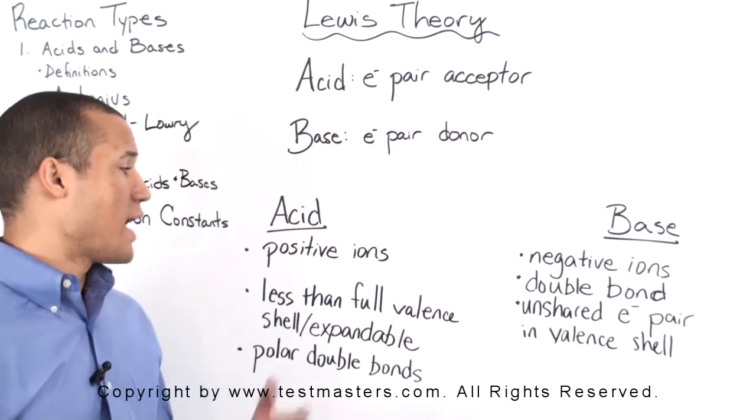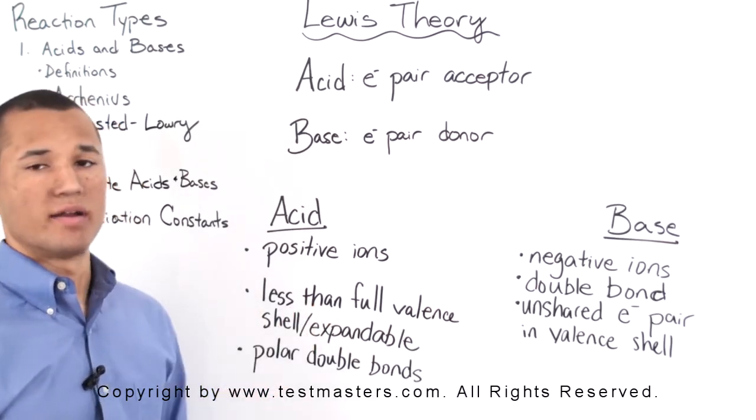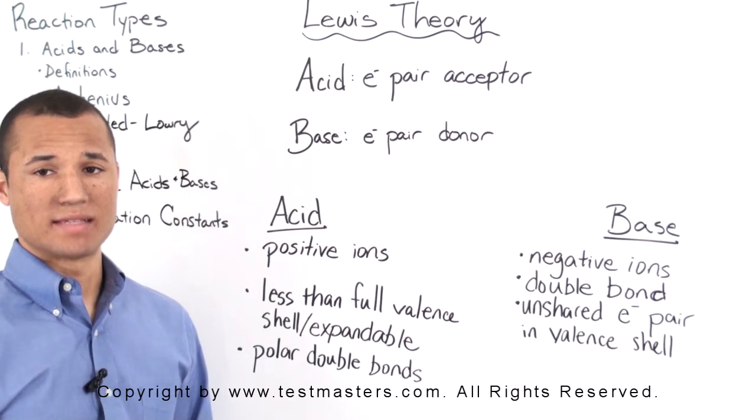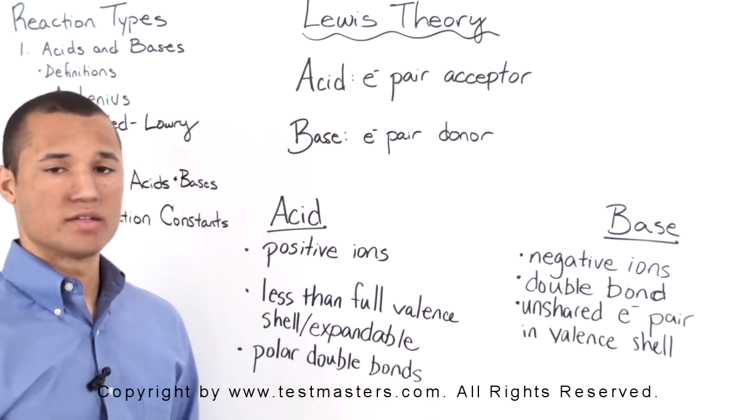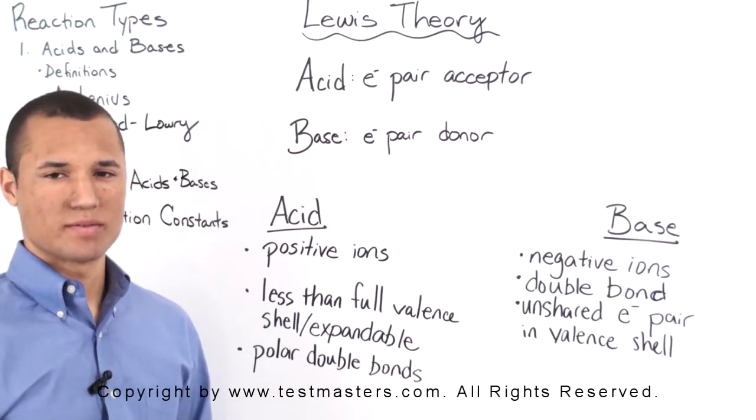For example, any positive ion can serve as an acid, while any negative ion can serve as a base.